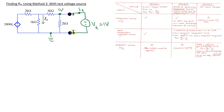The voltage at this node is one volt because of the direct application of the test voltage source, which is connected between ground and this node. So we are only left with this node where the node voltage is not known. Suppose we call this voltage V2.